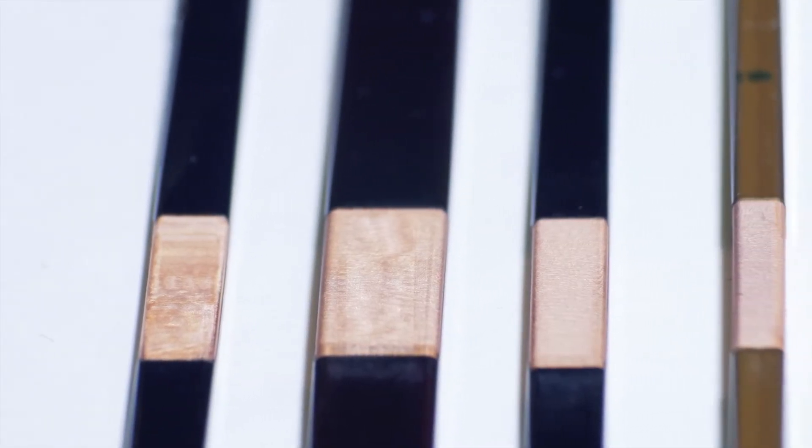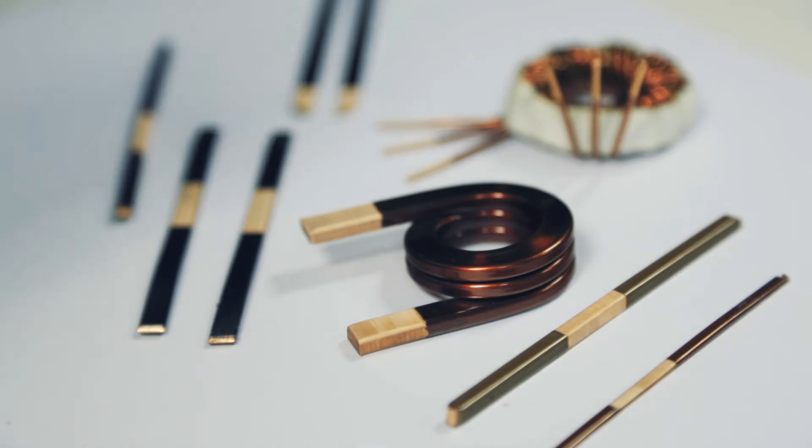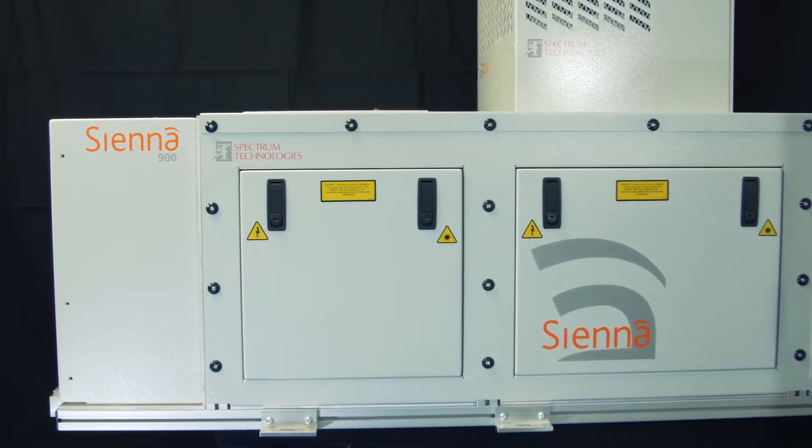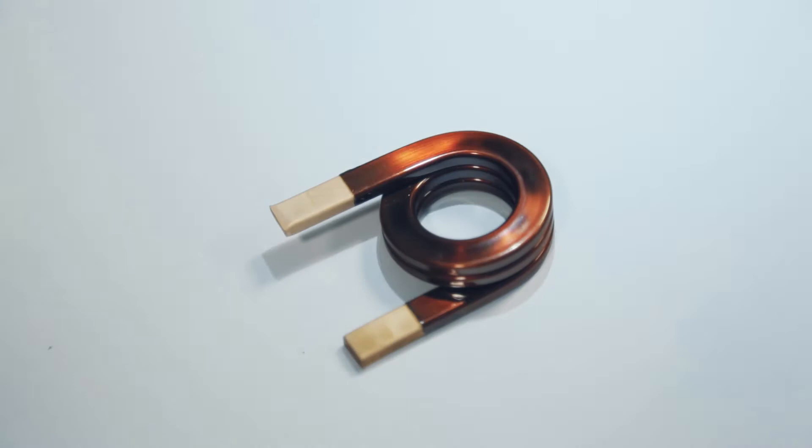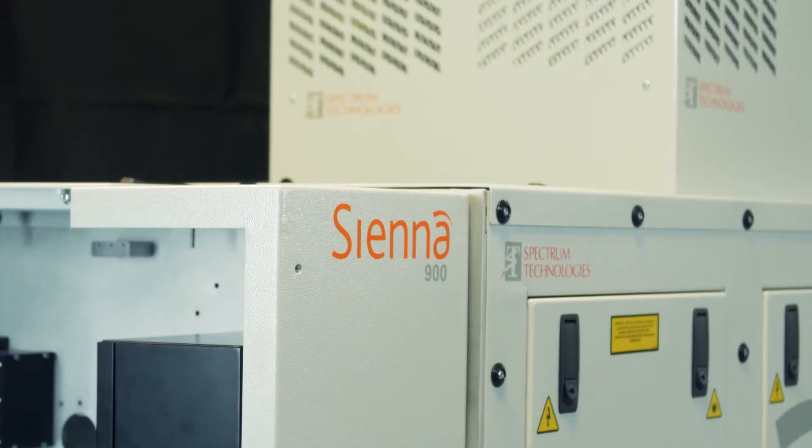Designed for high-speed precision ablation of hard-bonded polymer enamel insulations, the Sienna 900 produces a quality strip unparalleled by existing alternatives.